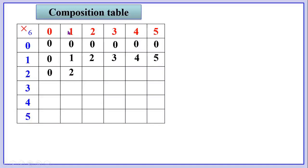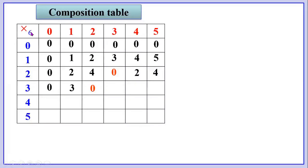1 into 5 is 5. Now the third row headed by number 2: 2 into 0 is 0, 2 into 1 is 2, 2 into 2 is 4, 2 into 3 is 6 — when 6 is divided by 6 the remainder is 0, so we write 0. 2 into 4 is 8 — when 8 is divided by 6, the remainder is 2. 2 into 5 is 10 — when 10 is divided by 6, the remainder is 4.